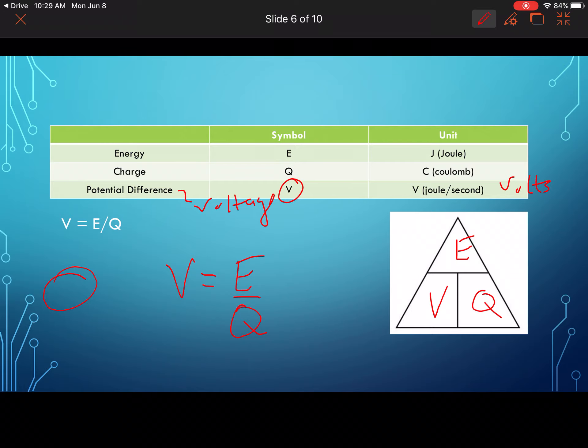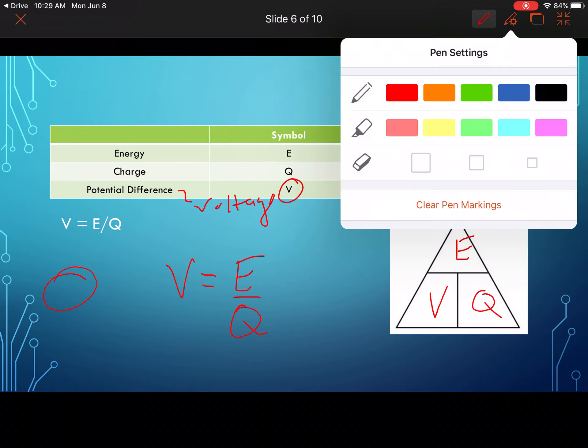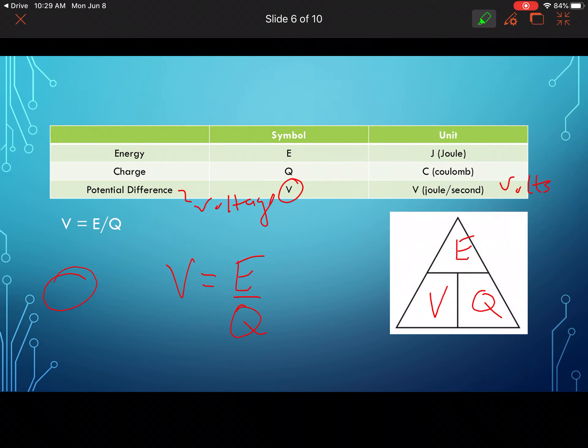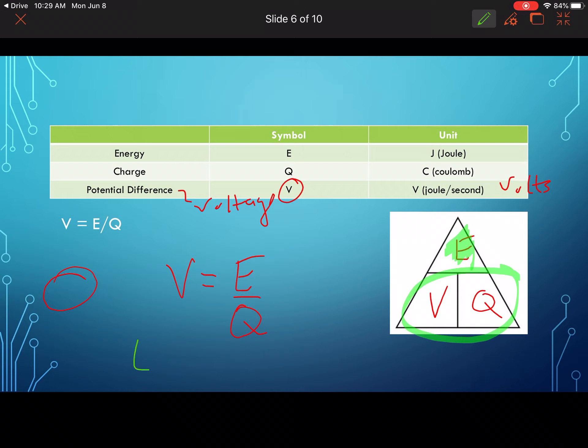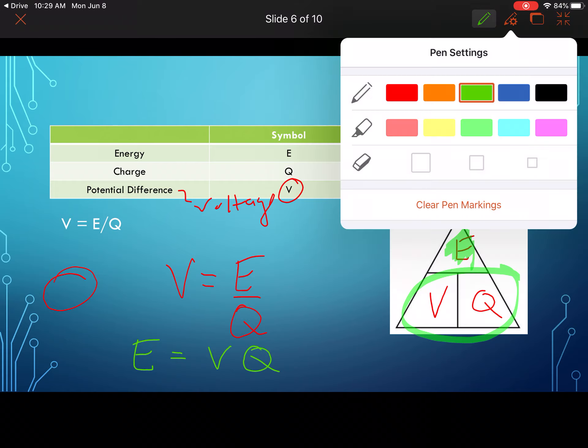We're going to go V equals E over Q, and I'll just show you again if we were to rearrange something. Let's say we're solving for E. If I ask you to solve for E, what you're going to do - you're going to cover up the E, and then what's left over? V multiplied by Q, right? So then the formula for energy, if I were to rearrange that: energy equals V times Q.